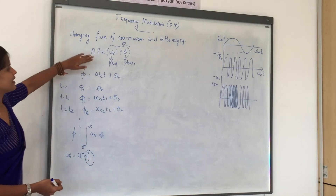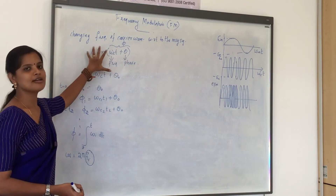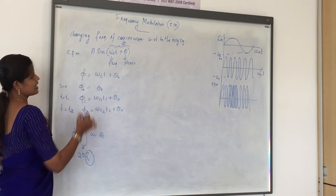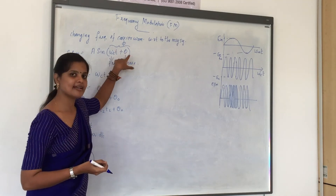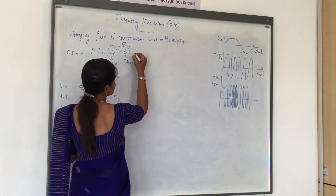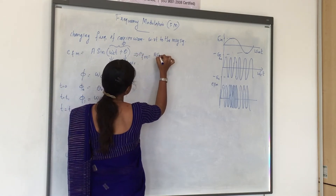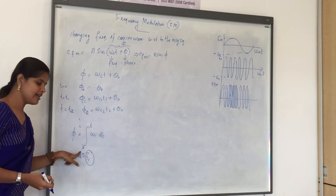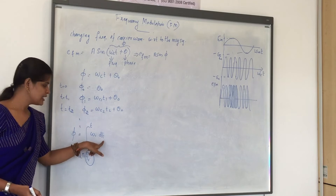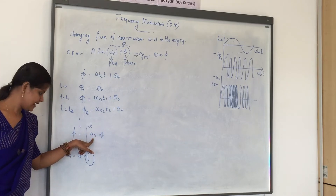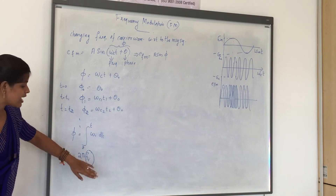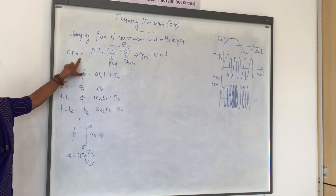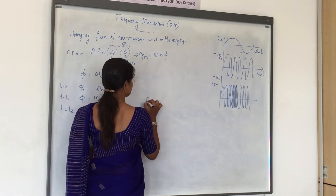I have taken A sin(ωct + θ) as the wave obtained after modulation — EFM. Marking the entire term as phi, we can rewrite it as EFM = A sin(phi). The formula for phi is the integral from 0 to t of ωi dt, where ωi is 2πfi. Now we need to find the instantaneous frequency of the frequency modulated signal.